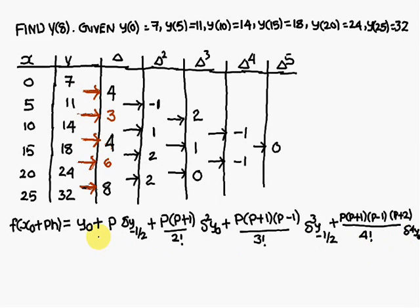Let us look at how the P notation is framed. First term has P, next P(P+1) — that is addition. Then subtraction: P(P+1)(P−1). Then addition again: P(P+1)(P−1)(P+2). The pattern alternates — already P+1 is there, so you write P+2 next. This is how you remember the Gauss backward interpolation formula.